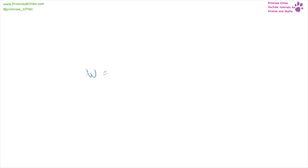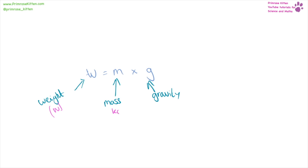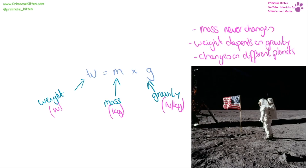Your weight is not the same as your mass because your weight is equal to your mass times gravity. Your weight is measured in newtons, your mass is measured in kilograms, and gravity is measured in newtons per kilogram. So your mass will never change but your weight will change depending on the planet or depending on gravity, which is why when they went to the moon they were basically weightless and could jump around.